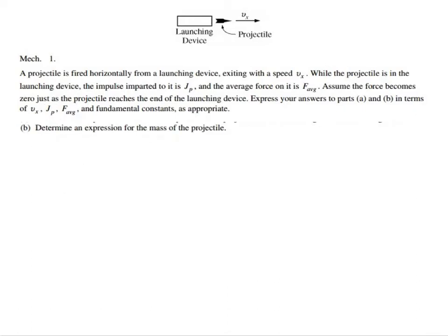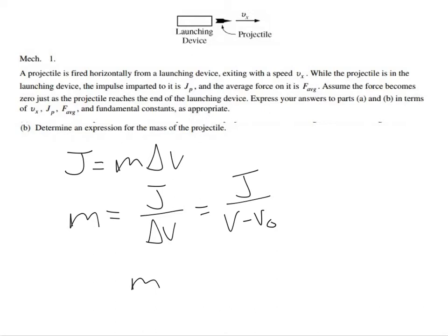Now they want to know what is the mass of the projectile. Well again, they gave us the whole impulse, so I kind of want to continue with that. Remember impulse is equal to m delta v. So mass is just J divided by change in velocity, or J divided by v_f minus v_0. In this case, the object - I think we're supposed to assume that it starts at rest.